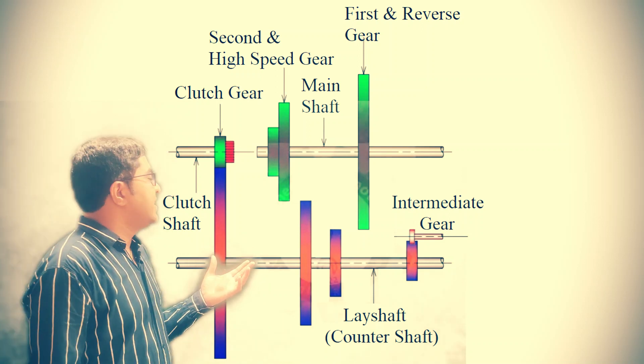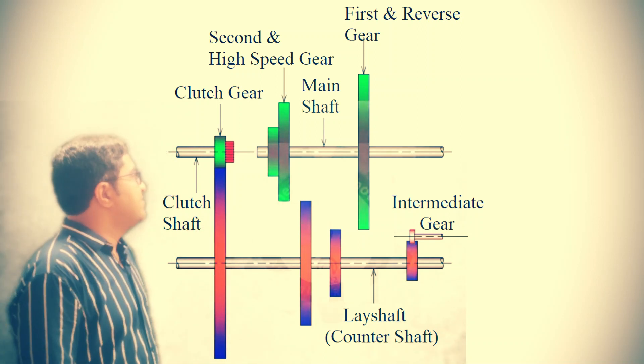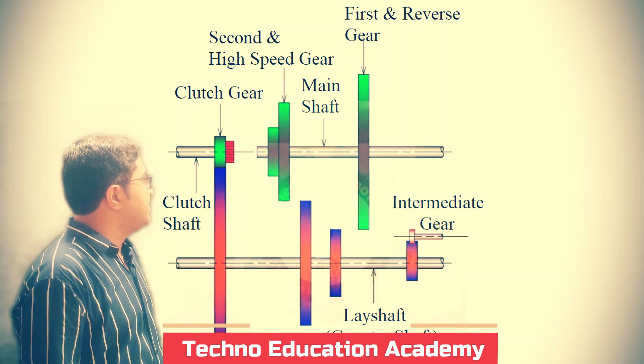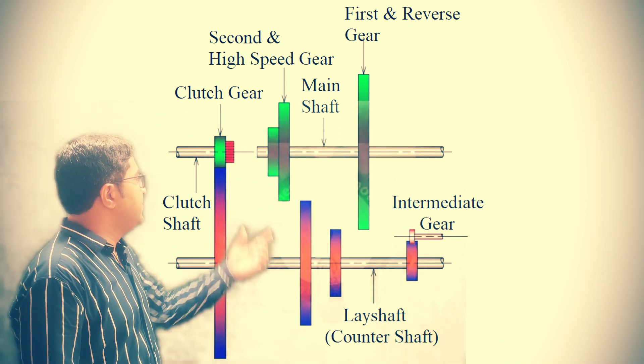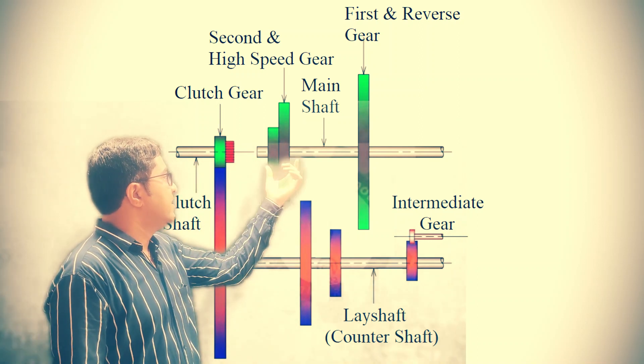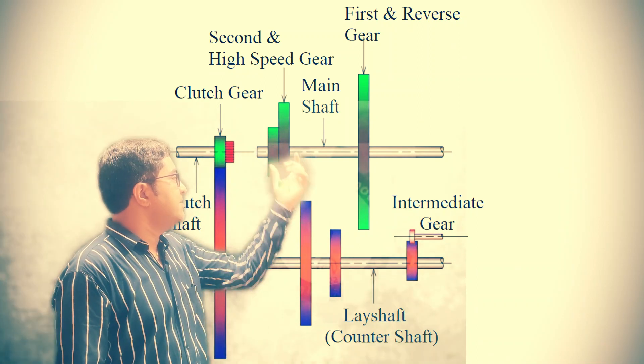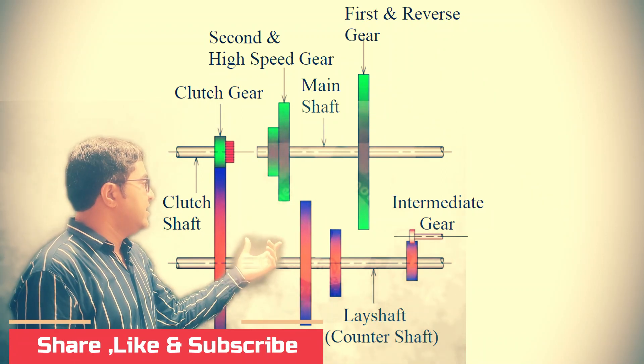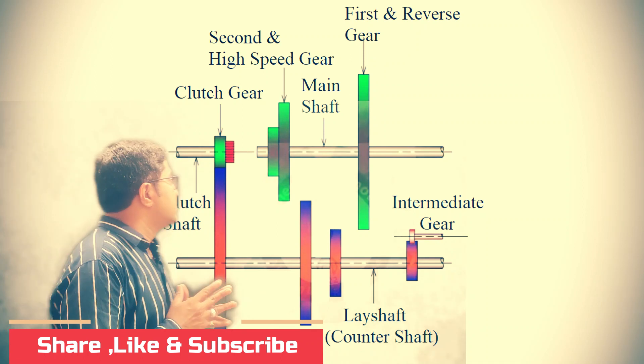Here you can see that this is the schematic diagram of the sliding mass gearbox. Here we are using two shafts: one main shaft on which the gears will move or slide on the spline shaft, as well as the layshaft. On layshaft all the gears are fixed.